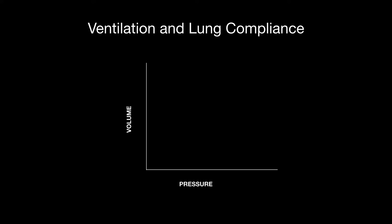Let's look at a graph of ventilation and lung compliance. You have pressure on one axis and volume on the other. As pressure increases, volume increases — but at first it happens slowly. Then it hits a sweet spot where it increases a lot. Then at some point it doesn't change at all. This sweet spot is where a small change in pressure creates a large change in volume, and it occurs when your lungs are at functional residual capacity.